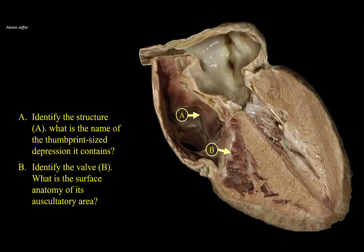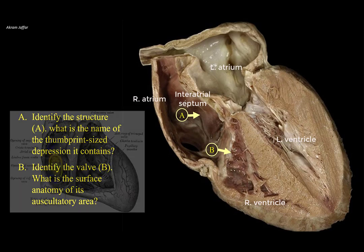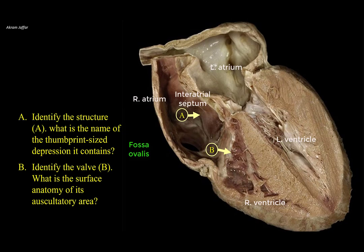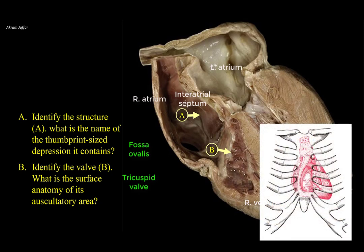Identify structure A and the thumbprint-size depression it contains. Identify valve B and the surface anatomy of its auscultatory area. This is a longitudinal section of the heart showing the four chambers, including the interatrial septum between right and left atria. A marks the thumbprint-sized oval depression in the interatrial septum — this is the fossa ovalis. B is located at the right atrioventricular orifice, the opening between the right atrium and right ventricle, guarded by the tricuspid valve. The sound of this valve is best heard just to the left of the lower part of the body of the sternum. Closure of this valve, along with the mitral valve, produces the first heart sound.